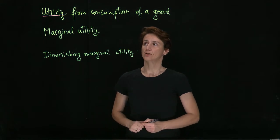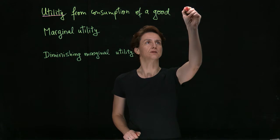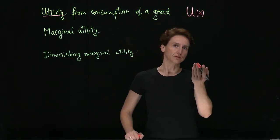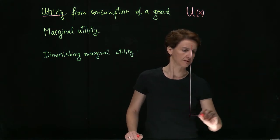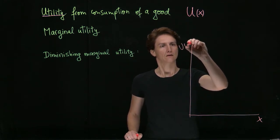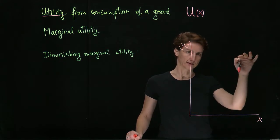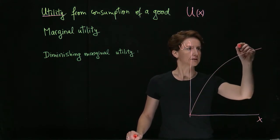If we denote the quantity of the good with x, then utility will be simply a function u of x. Since this is going to give us a numerical value, we can graph that function. If the consumer likes the good, then we can assume the utility will be increasing. Let's say it looks like this.